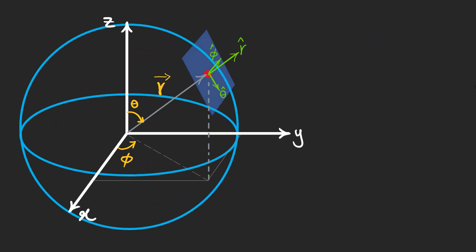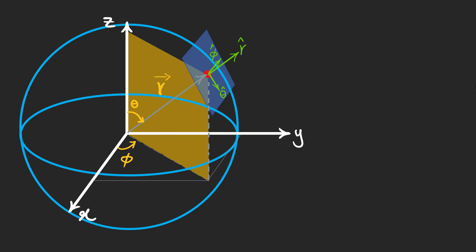Let's get back to our imaginary sphere again. As you can see, r hat and theta hat are on this yellow plane, and phi hat lives on the red plane, which is parallel to the xy plane. These two planes are perpendicular.